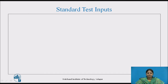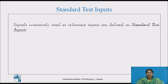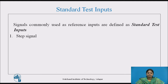Let's see the standard test inputs. In practice, many signals are available which are functions of time and can be used as reference inputs for various control systems — such as step, ramp, sawtooth, square wave, triangular, etc. However, while analyzing the system, it is highly impractical to consider each one as an input and study the response. Hence, from the analysis point of view, the most commonly used reference input signals are defined as standard test inputs. The standard test inputs are: step input, ramp input, parabolic input, and impulse input.